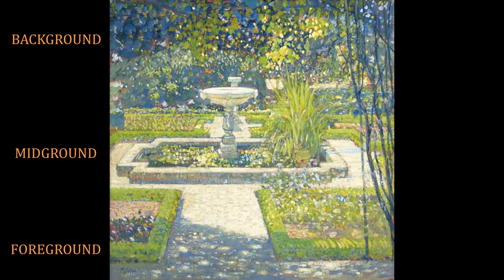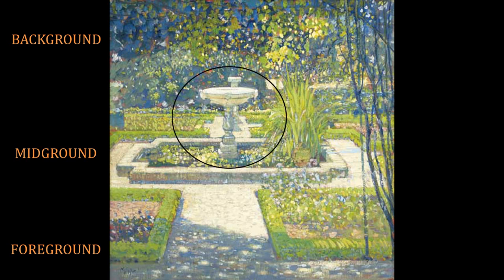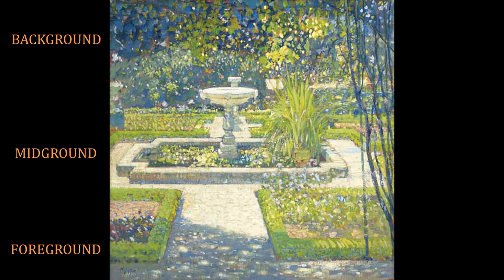Looking at Dappled Light, in the foreground we have some flower beds with flowers, a walkway, and some shadow. Going into the mid-ground, we have a fountain and a pond. In the pond, we have a bush, some flowers, and some lily pad-like items. And then last, the background, which has some leaves, some branches, and even some bushes.